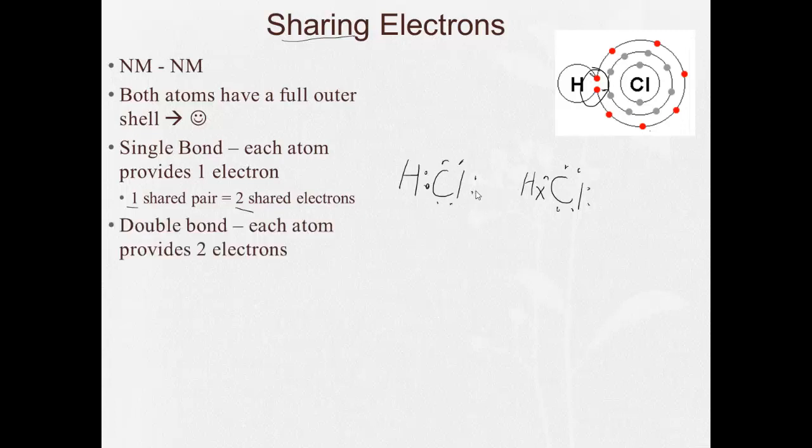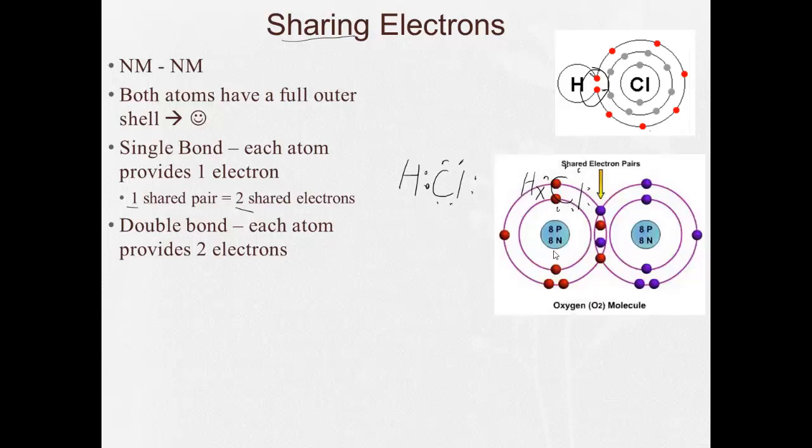In a double bond, each atom provides two electrons. Here's an O2 molecule. And we can see this oxygen is providing these two electrons for the bond, and this oxygen is providing these two electrons for the bond. So there's two shared pairs, which is equal to four shared electrons.